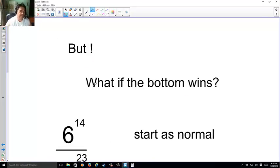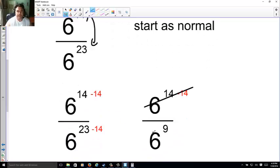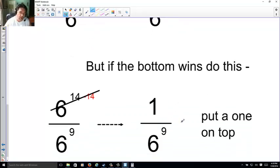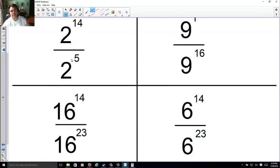But, what if the bottom wins? Well, 14 versus 23. In this case, the bottom wins by 9. Since the bottom wins, all you have to do is you clear out the top. Because you have to make the fraction though, you put a 1 on top. So, put 1 over 6 to the 9th. You try. Try these 4. Go ahead.